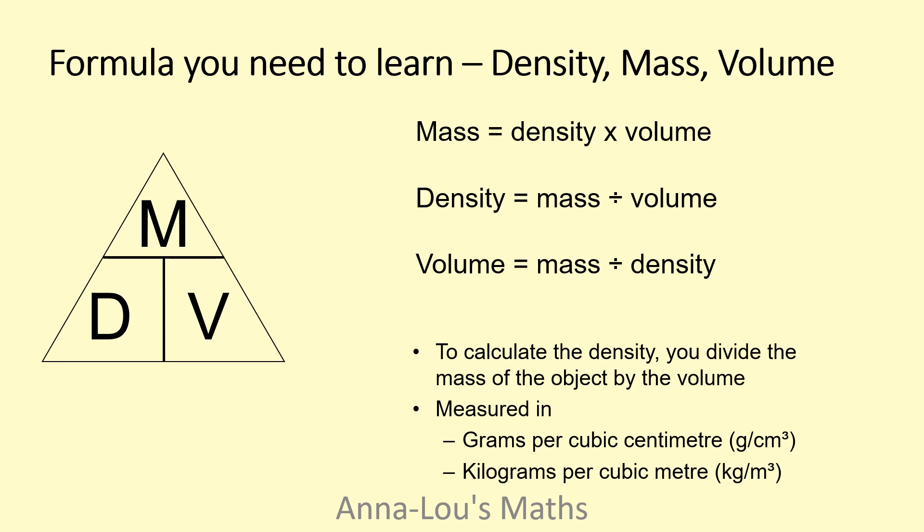So similar to speed—speed is in miles per hour or kilometers per hour—density is in grams per cubic centimeters or kilograms per cubic meters. So these are the units that we're using for density. Sometimes you are getting marks for your units, so make sure you're mindful of those.